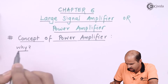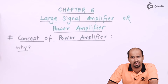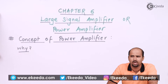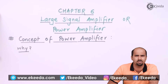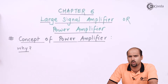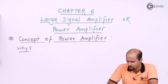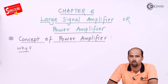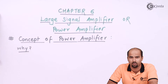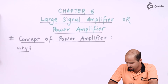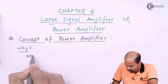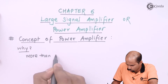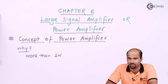The first question that comes to mind is: why do we require a power amplifier if all the voltage amplifier configurations — CE amplifier, CS amplifier, CB amplifier — are already available? Basically, the need for a power amplifier comes when I want to handle a higher amount of power. Specifically, if I am handling more than one watt of power, then I need a power amplifier.